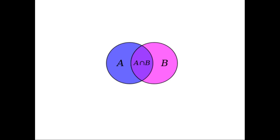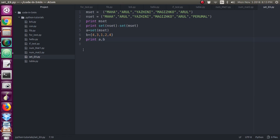That same concept we will see in Python also. Set A and set B — the operations you can do with Venn diagrams in mathematics are all possible in Python. What is a set? It is an unordered collection of items. Whereas in tuples and lists it is an ordered collection of items, but in sets it is not an ordered collection — it is an unordered collection.